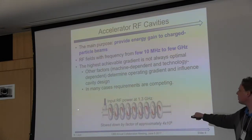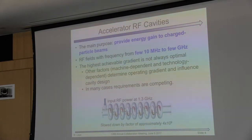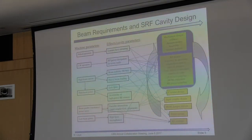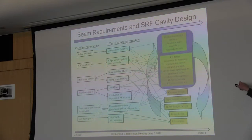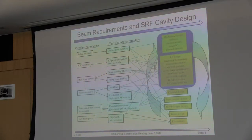The basic principle: charged particles go through these metal boxes — could be normal conducting, could be superconducting. You drive the oscillating fields inside some eigenmode, which has a longitudinal electric field, and that causes the beam to be accelerated if the timing is right. Optimizing such a structure is quite complex. You have machine parameters on the left that affect cavity parameters, which then influence your cavity design — but also related things like cryostat design and the input coupler which brings RF power into the cavity. It's a very complex optimization, and you often cannot achieve all goals at once.